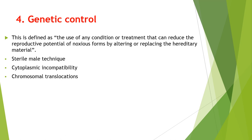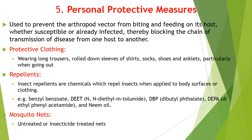Next is genetic control, which is defined as the use of any condition or treatment that can reduce the reproductive potential of noxious forms by altering or replacing the hereditary material. Some techniques are: sterile male technique, cytoplasmic incompatibility, and chromosomal translocations, which have been found to be effective in small field trials. All of you are familiar with the next method of vector control — personal protective measures — which are used to prevent the arthropod vector from biting and feeding on its host, thereby blocking the chain of transmission from one host to another.